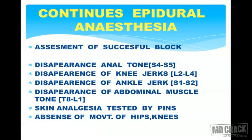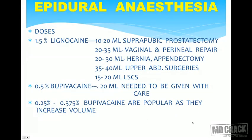To assess whether epidural anesthesia is successful: disappearance of anal tone indicates block at S4–S5; disappearance of knee jerks indicates block at L2–L4; disappearance of ankle jerk indicates block at S1–S2; disappearance of abdominal muscle tone indicates block at T8–L1. Skin analgesia is tested with pinpricks, and absence of movements of hip and knee joints is also noted.